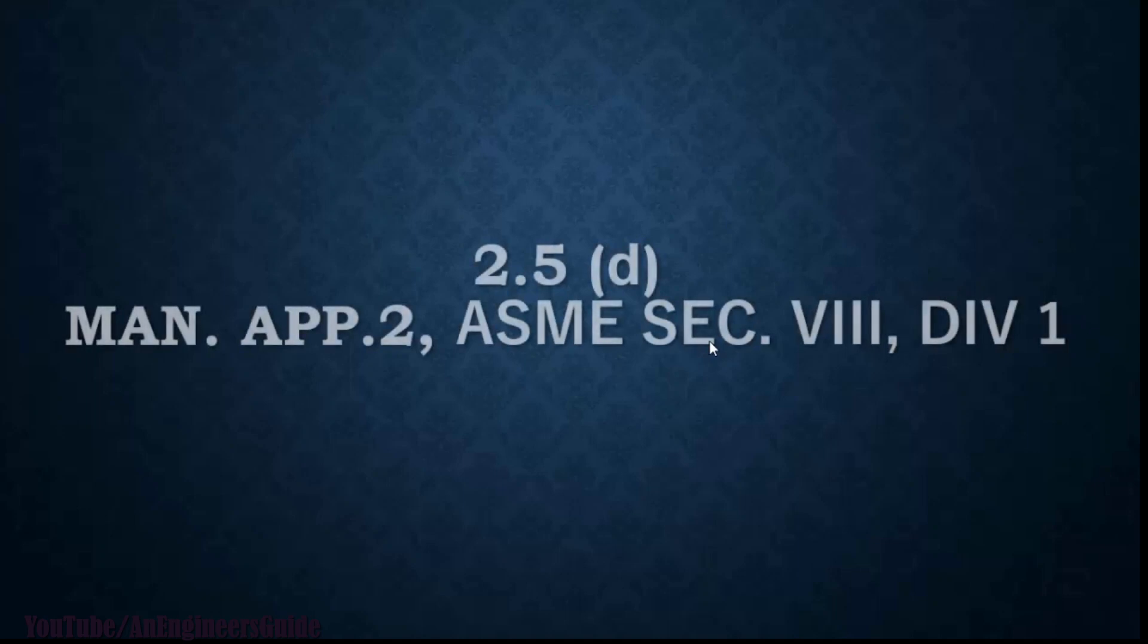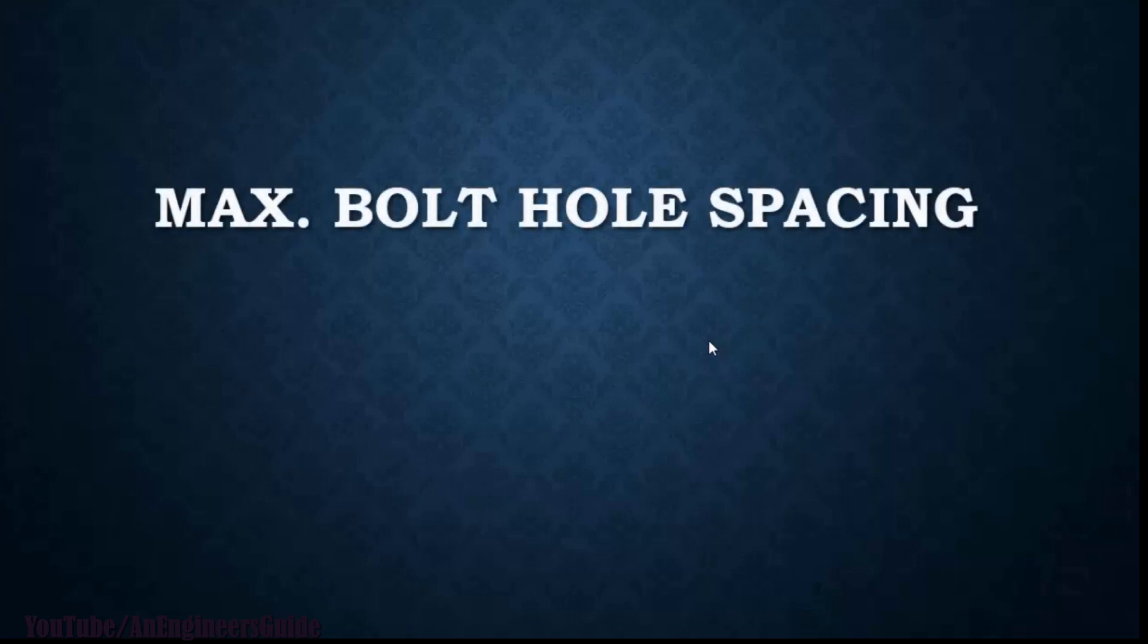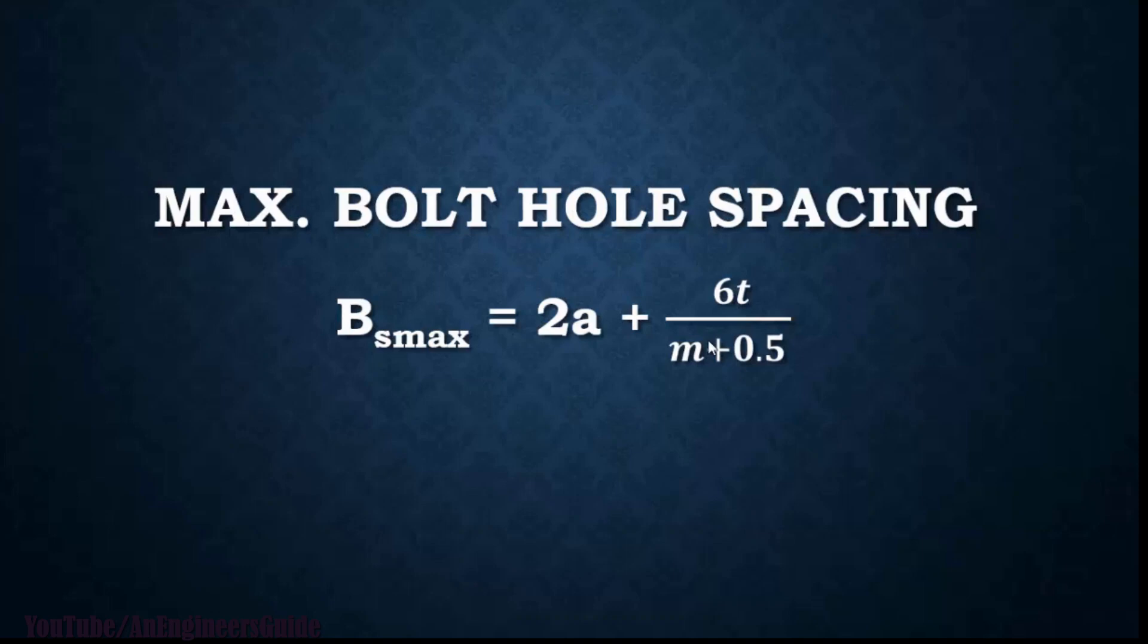Now let's go to clause 2.5 from mandatory appendix 2 ASME Section 8 Division 1. Here you will get the formula for maximum bolt hole spacing: BS max equals 2A plus 6T divided by M plus 0.5, where A is the bolt diameter, T is the nominal thickness of the flange without corrosion allowance, and M is the gasket factor.